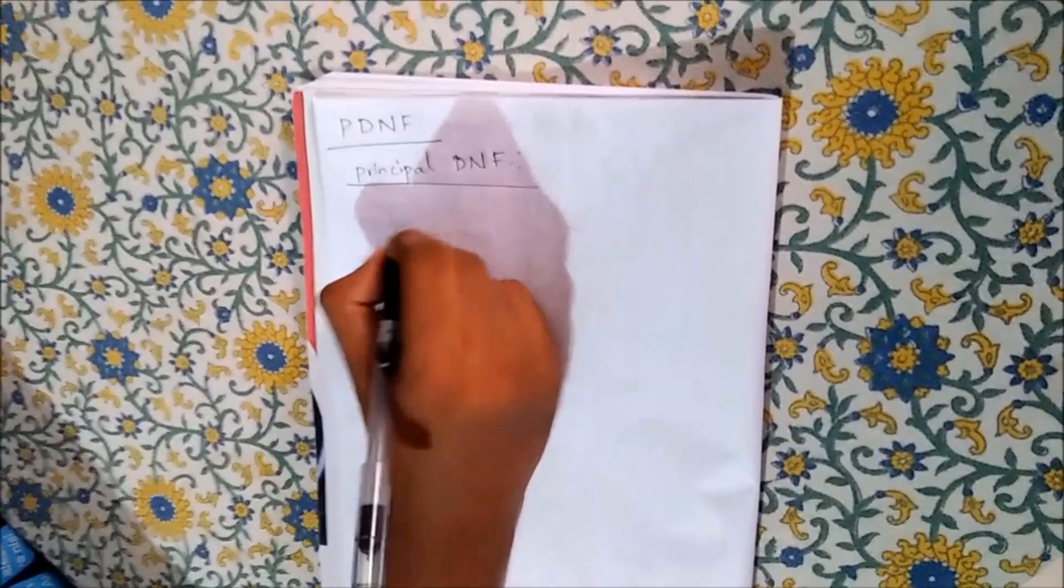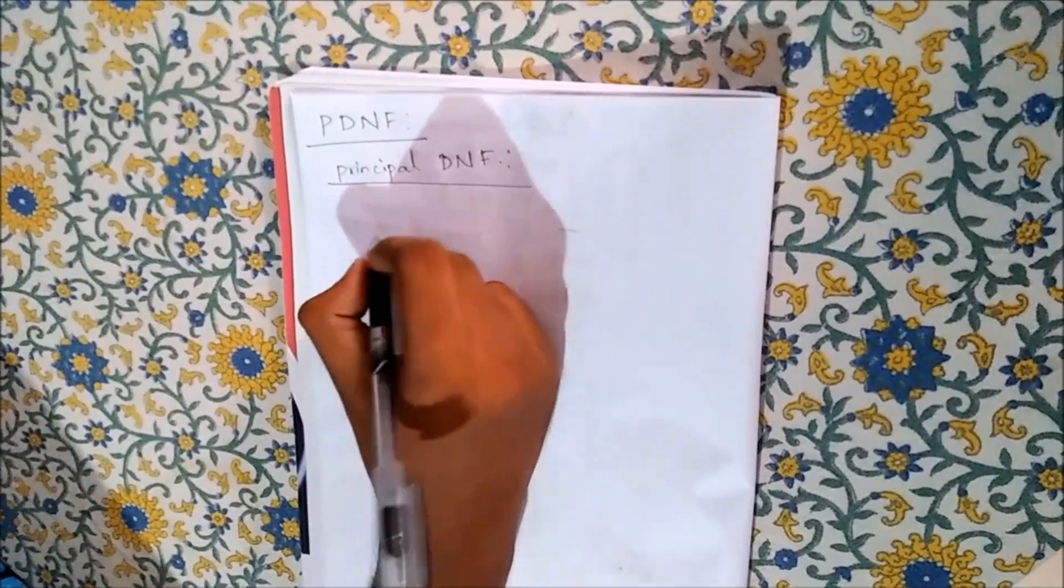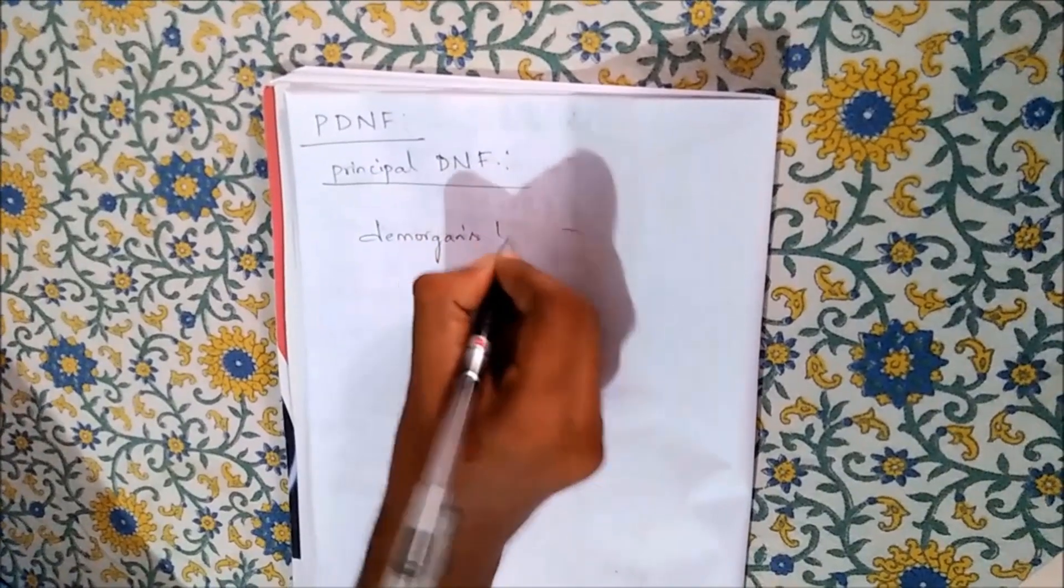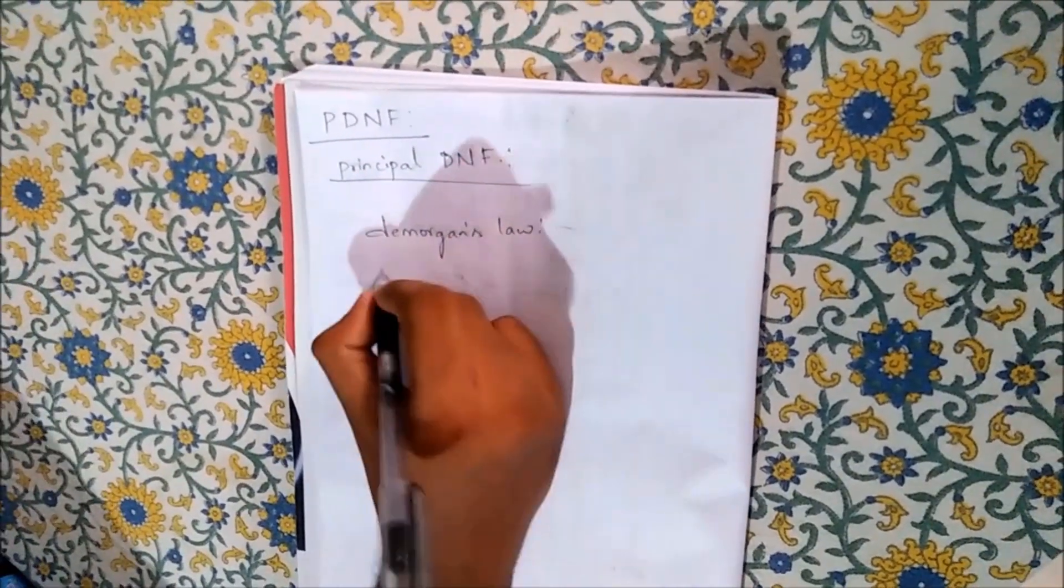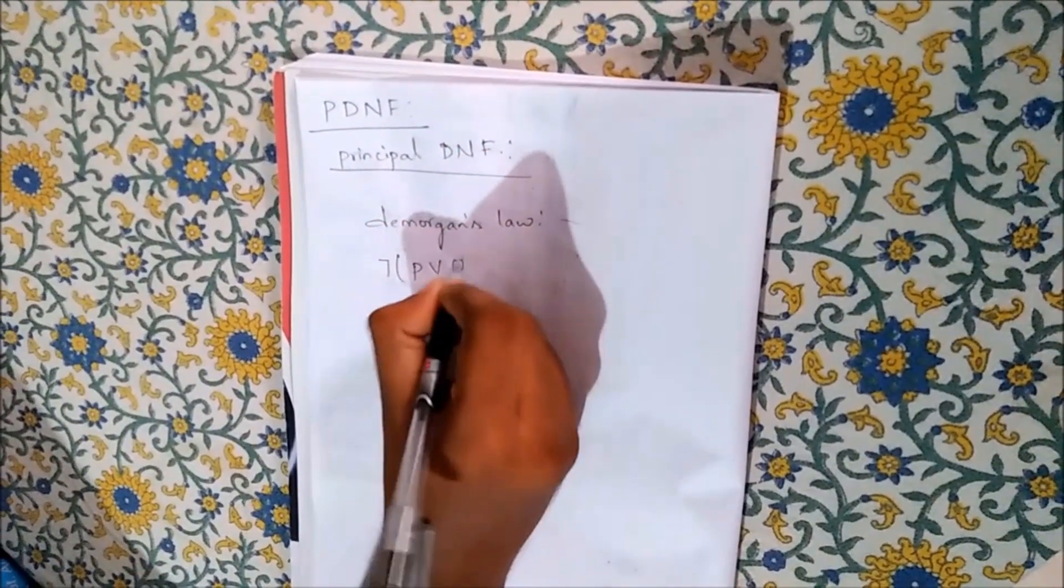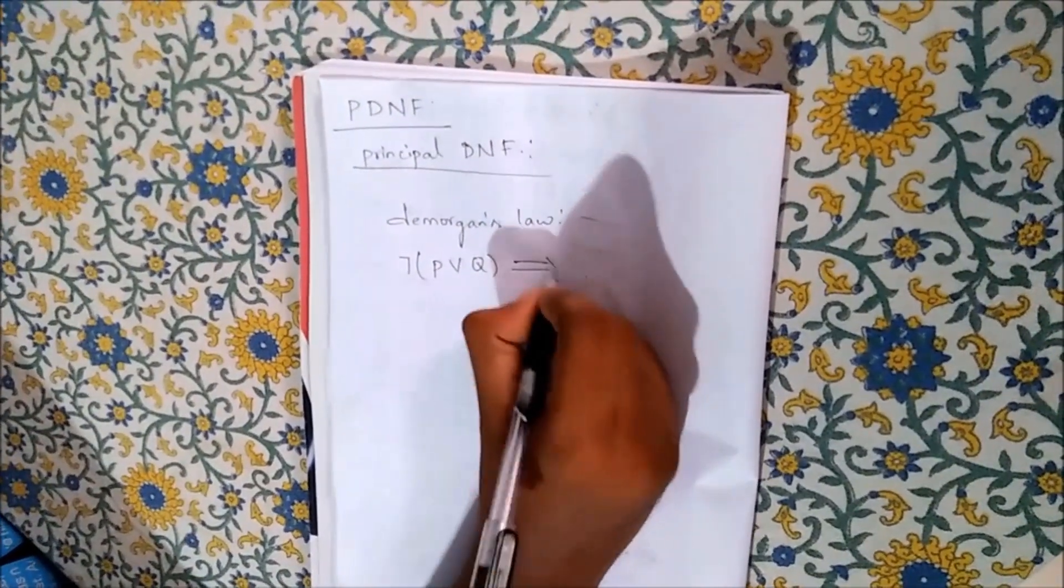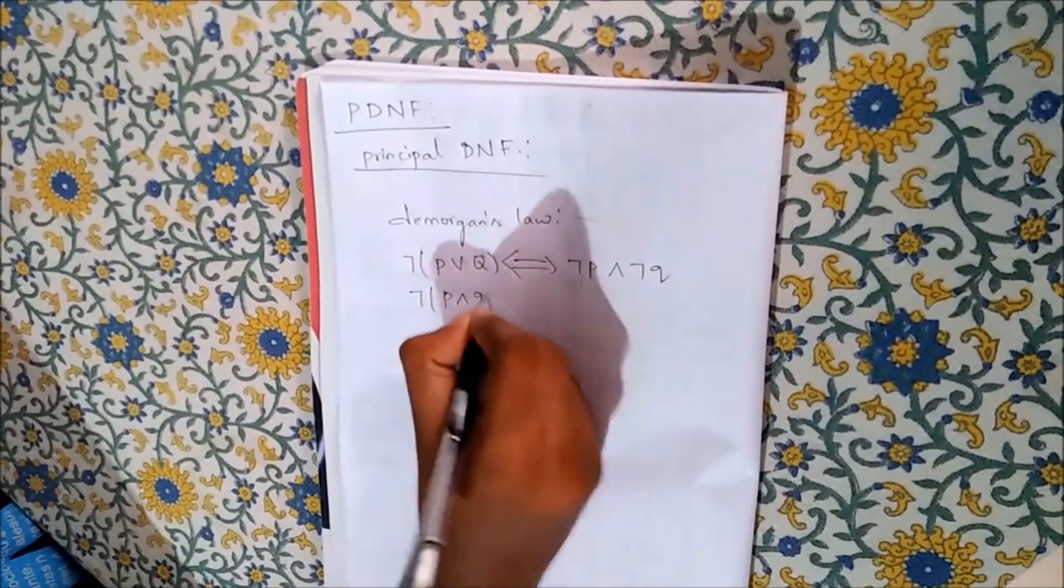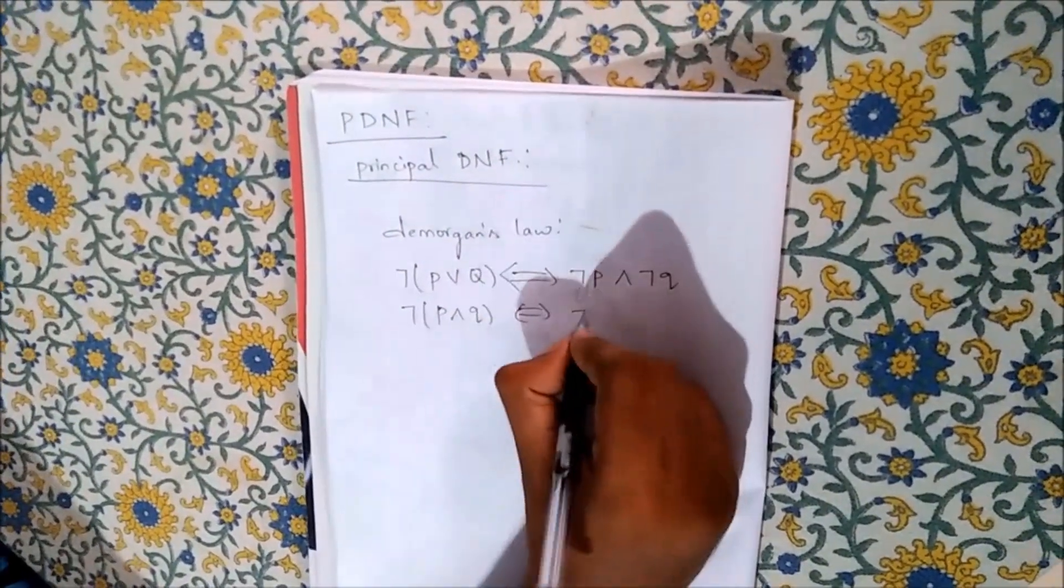There are some laws. First one, De Morgan's law. These are very useful and very important. Similarly, if there is and then the formula will be.